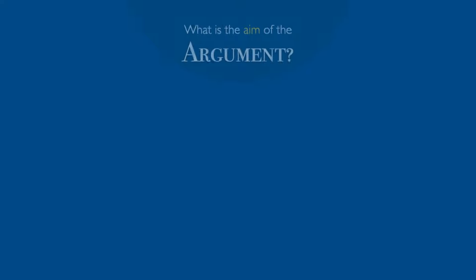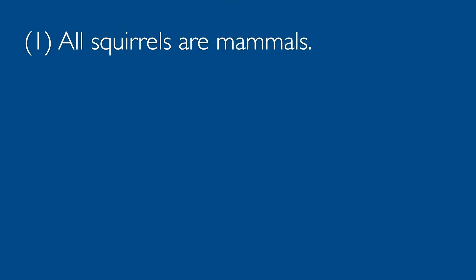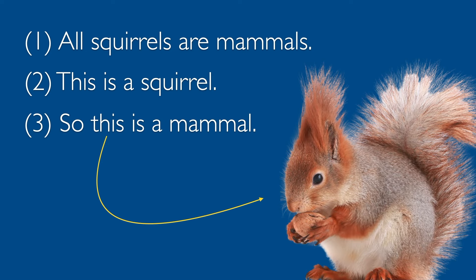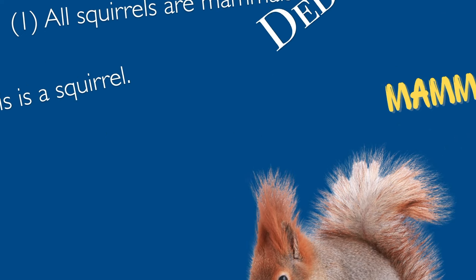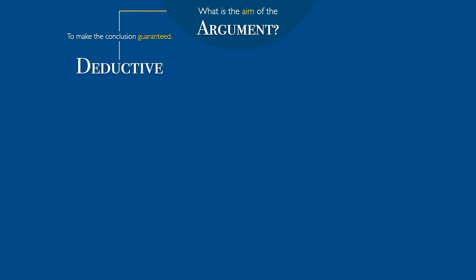The first thing to ask is: what is the aim of the argument? Some arguments try to make their conclusion guaranteed. That's the hallmark of a deductive argument. For example: all squirrels are mammals; this is a squirrel; so this is a mammal. This argument isn't trying to show that this is probably a mammal — that would be weird. It's trying to show that clearly this must be a mammal. It's a deductive argument; its goal is a guaranteed conclusion.